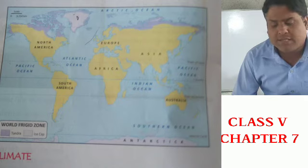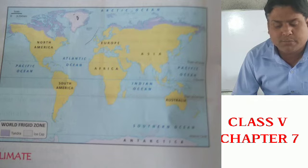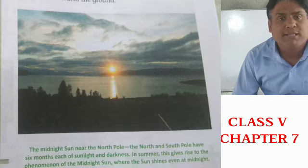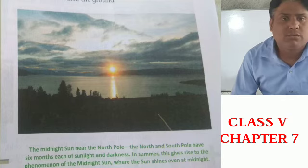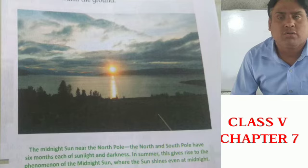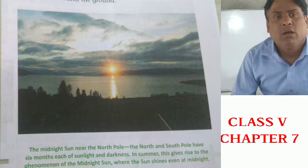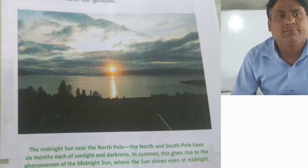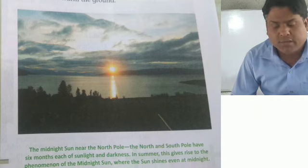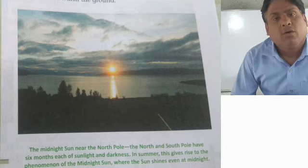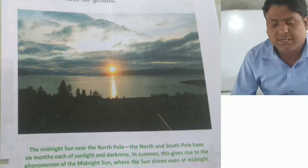As we move past the temperate zone and travel towards the poles, we enter the frigid zone. We already know that the entire earth is divided into three heat zones. The frigid zone experiences the polar type of climate.